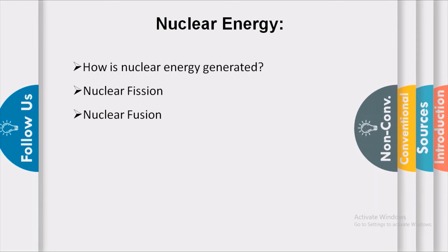We use nuclear fission to generate electricity in a nuclear power plant. In nuclear fusion, lighter nuclei are joined to make a heavier nucleus, producing a tremendous amount of energy. This same energy is the source of energy in the sun and stars. The conditions required for fusion are extremely high temperatures of millions of degrees and millions of particles of pressure.